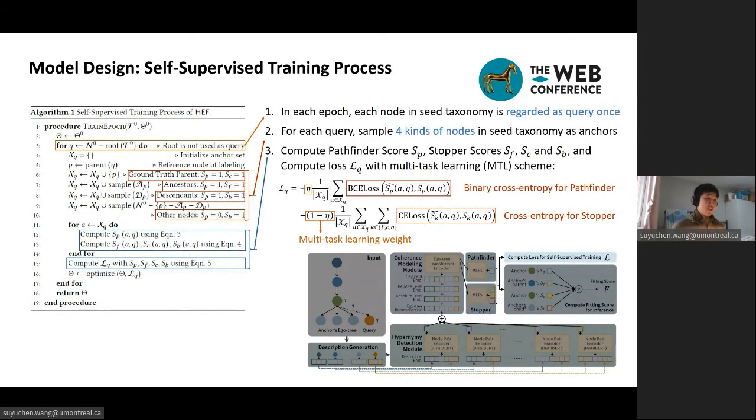In this model, we generate training data from the seed taxonomy to perform self-supervised training. First, in each epoch, each node in the seed taxonomy is regarded as query once. Second, for each query, we sample four kinds of nodes in the seed taxonomy as anchors. These four kinds of anchor nodes covers all possible combinations of pathfinder and stopper tags. And finally, we compute Pathfinder score SP, and the three stopper scores SF, SC, and SB, and compute loss LQ with multitask learning scheme. For the detailed proportion of the four kinds of nodes, please refer to our paper. And here, the eta is multitask learning weight, and we weighted sum the binary cross-entropy for Pathfinder and the cross-entropy for stopper in the loss.